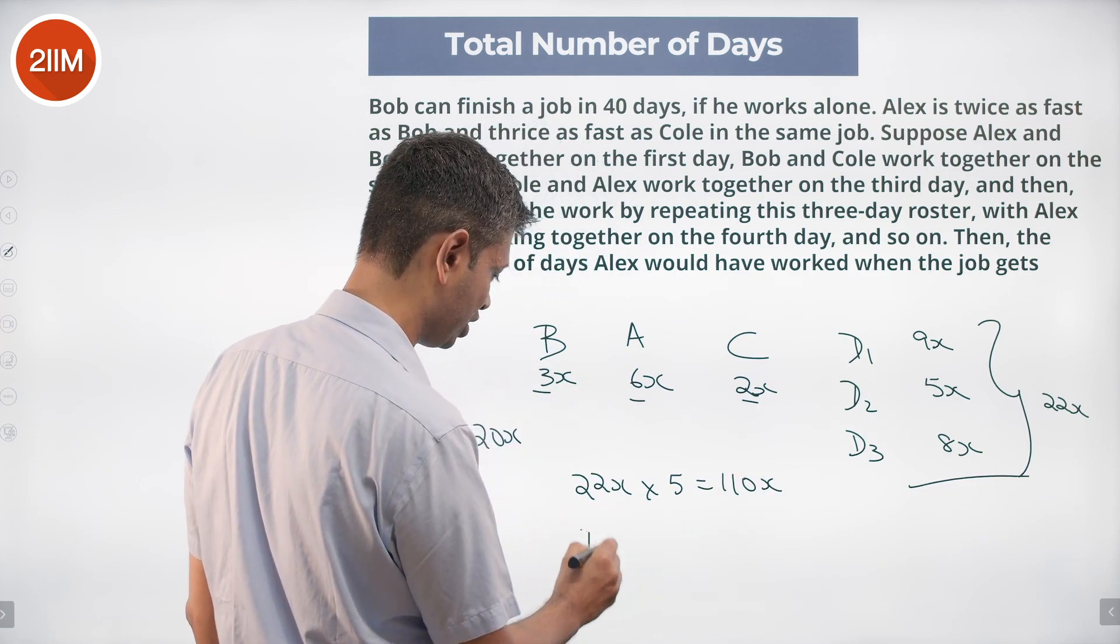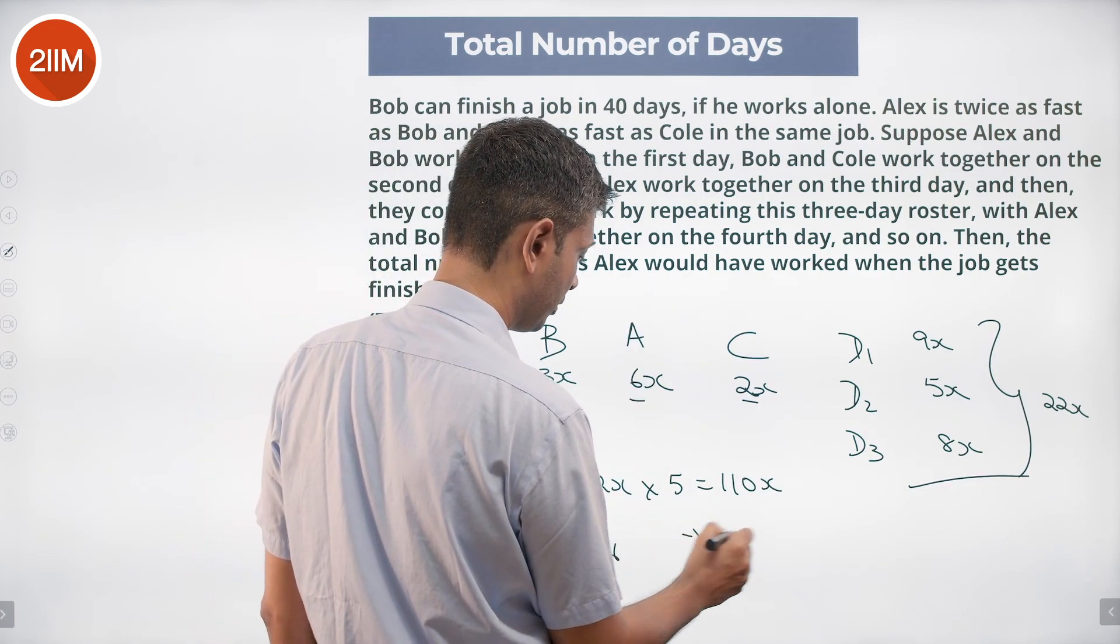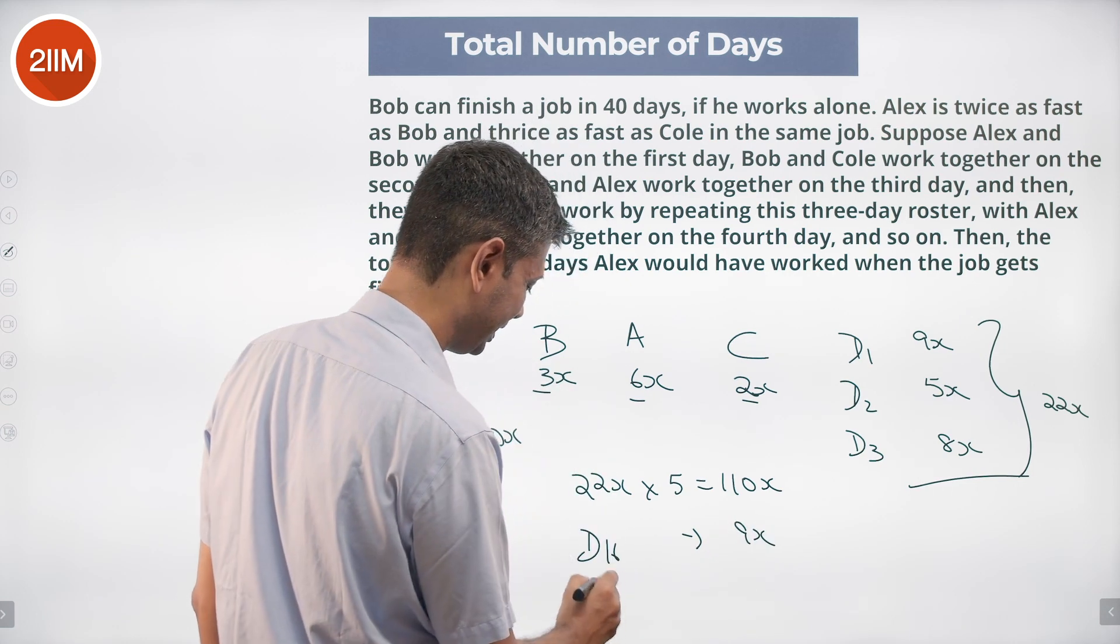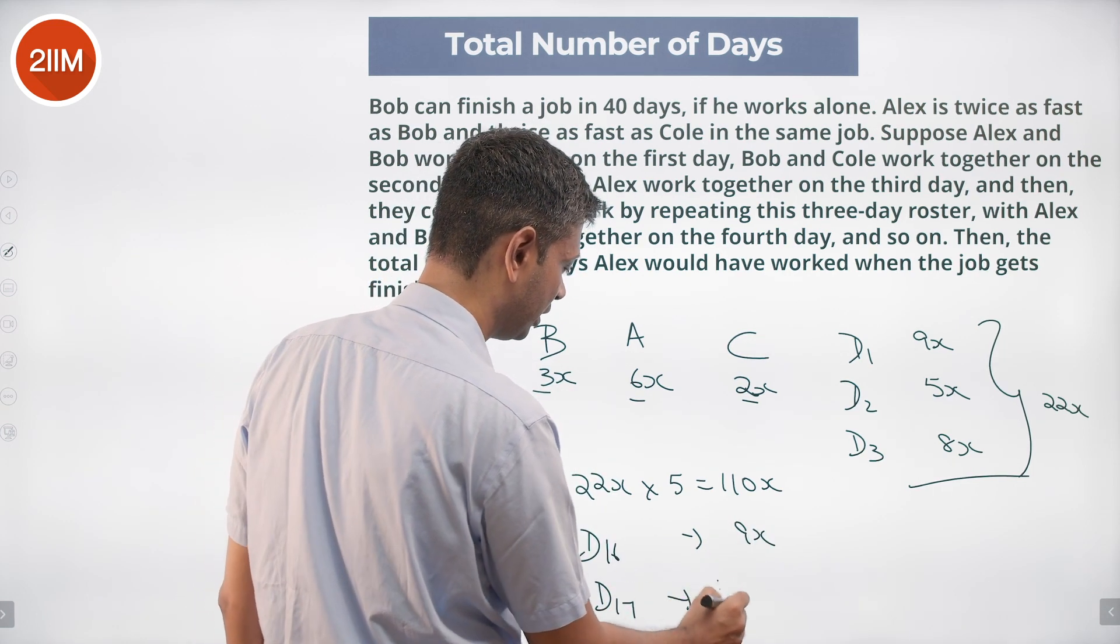So day 16 would be back to day 1 where we do 9x, and then day 17 is when it gets finished.